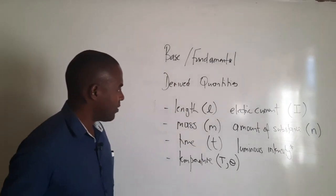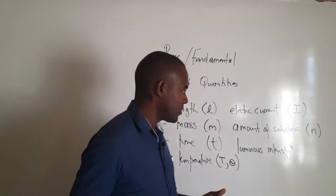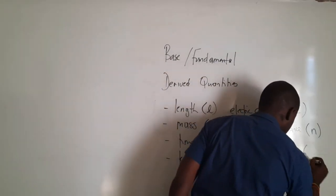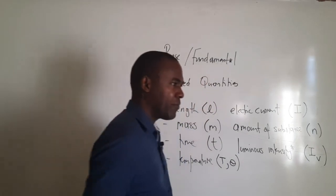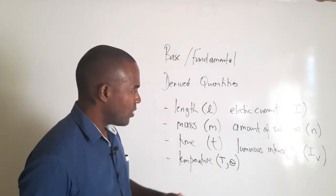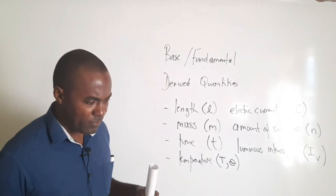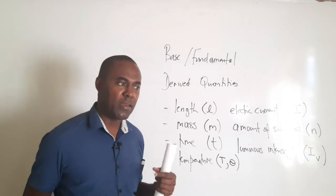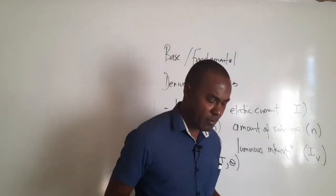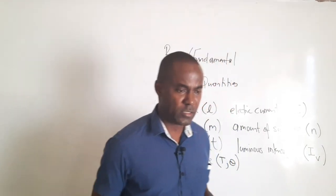We have the seven fundamental or base quantities and the symbols for the first six. The symbol for luminous intensity is an I with a subscript V, where V represents a photometric quantity. Luminous intensity is a fundamental quantity, but unless you do physics to a much higher level, you may never be required to calculate it. For completeness, however, you still need to be able to list all seven fundamental or base quantities.